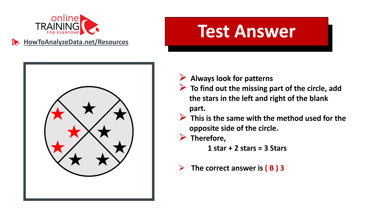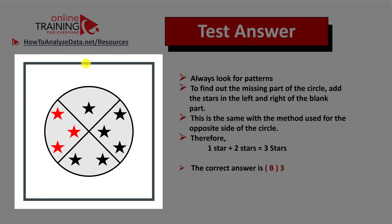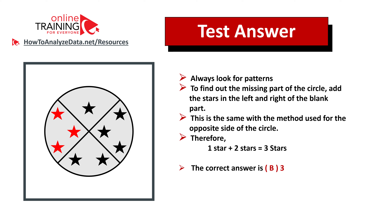To answer this question, look for patterns — and here the pattern is symmetry. If you draw a line in the middle of the circle from top to bottom, you need an answer that is symmetrical. We got a hint to use a mathematical operation: take the stars from the left of the blank part and add the stars from the right — one plus two equals three. You can also use subtraction to get the same answer. If you figure out the subtraction method, post it in the comments.